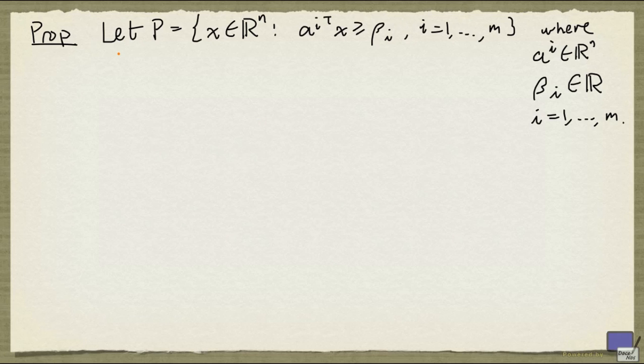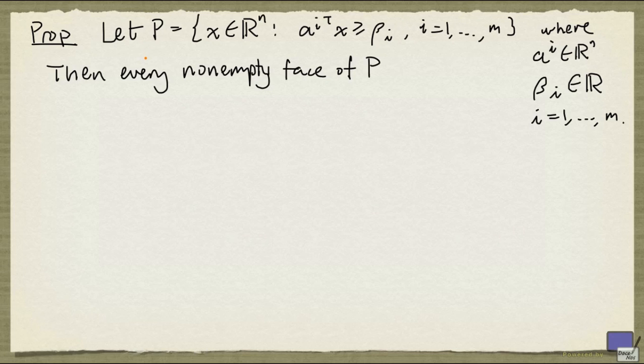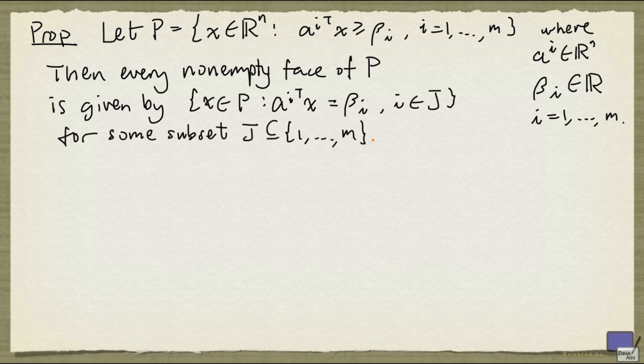Suppose we have a polyhedron P given as follows. Then every non-empty face of P is given by the set of X in P satisfying Aᵢ transpose X equals βᵢ for all i in J, where J is some subset of 1 up to m. So what this means is that if you are given a face, then there is a way to obtain that face by selecting a number of these inequalities and setting them to equations. Then all those points in P satisfying those equations will give you that face.